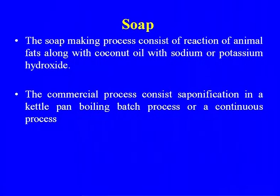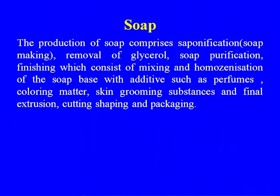The soap making process consists of the reaction of animal fats along with coconut oil with sodium or potassium hydroxide. The commercial process consists of saponification in a kettle pan, by batch or continuous process. The production of soap comprises saponification, soap making, removal of glycerin, soap purification, and finishing — which includes mixing and homogenization of the soap base with additives such as perfumes, coloring matter, skin grooming substances — and final extrusion, cutting, shaping, and packing.